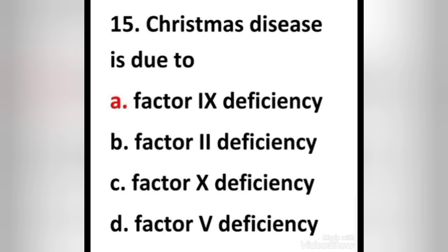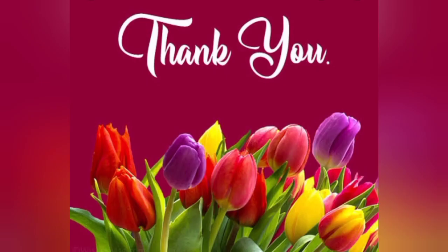Next question: Christmas disease is due to — (a) factor 9 deficiency, (b) factor 2 deficiency, (c) factor 10 deficiency, (d) factor 5 deficiency. Right answer is option A: factor 9 deficiency. Christmas disease is also called hemophilia B or factor 9 hemophilia. It is a rare genetic disorder in which your blood does not clot properly.